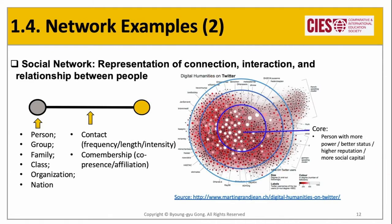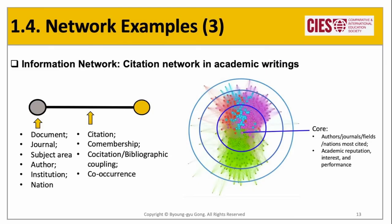A given picture here shows a Twitter network, where the core entails persons with more power, reputation, or better access to social capital. The information network has been one of the oldest subfields of network science, independently developing theory and concepts. It usually composes a network out of citation connections between documents. Citation practice is common in academic, legal, and patent writing, revealing how documents are influenced by existing papers. In citation networks, vertices can be documents, journals, subject areas, authors, institutions, or nations.